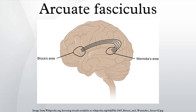The symptoms of conduction aphasia suggest that the connection between posterior temporal cortex and frontal cortex plays a vital role in short-term memory of words and speech sounds that are new or have just been heard. The arcuate fasciculus connects these two regions and circulates information back and forth, possibly contributing to short-term memory.